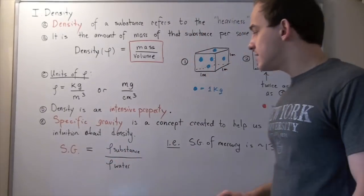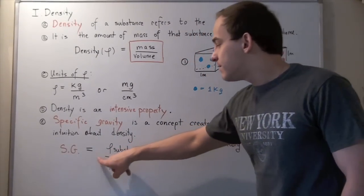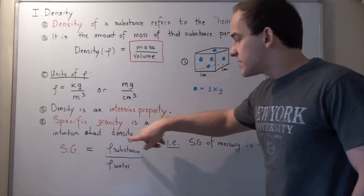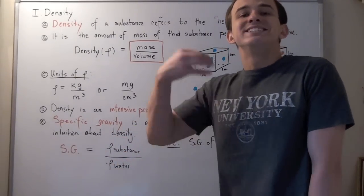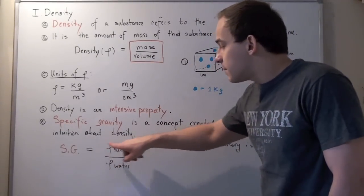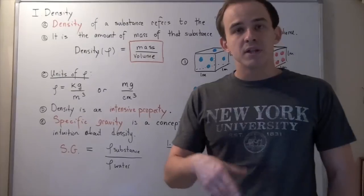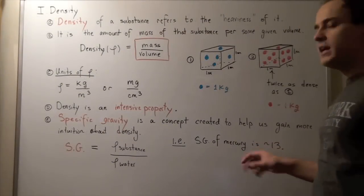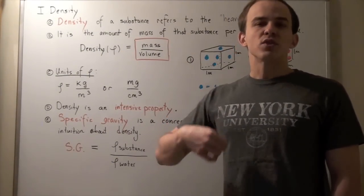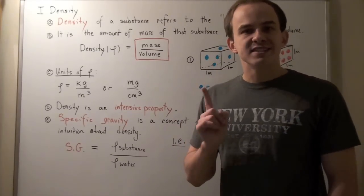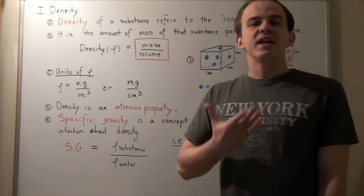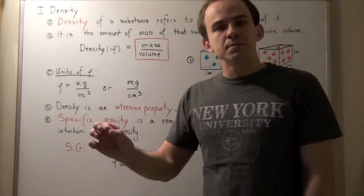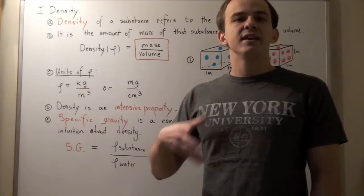The formula of specific gravity is the density of our substance divided by the density of water. This represents how much more dense or how much less dense our substance is compared to water. For example, mercury has a specific gravity of approximately 13, meaning mercury is 13 times as dense as water. So the same bucket of mercury will be 13 times as heavy as a bucket of water. That's what we mean by specific gravity — it helps us understand the density of a substance by comparing it to that of water.